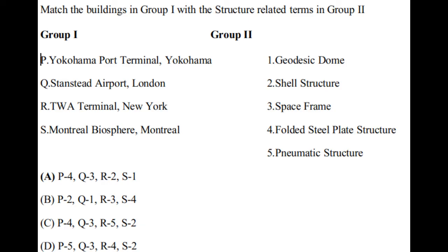Next question: match the buildings in Group 1 with the structure-related terms in Group 2. In Group 1: Yokohama Port Terminal, Yokohama; Stansted Airport, London; TWA Terminal, New York; Montreal Biosphere, Montreal. In Group 2: geodesic dome, shell structure, space frame, folded steel plate structure, and pneumatic structure.